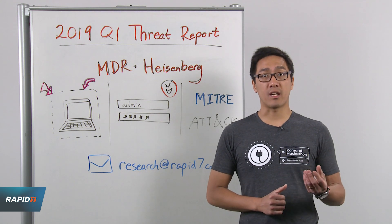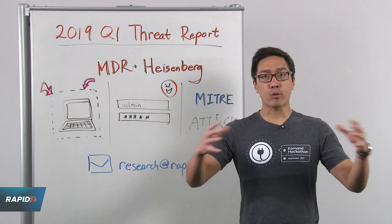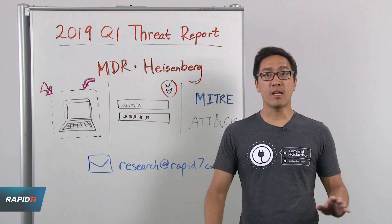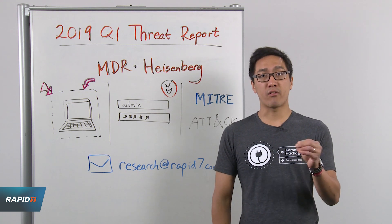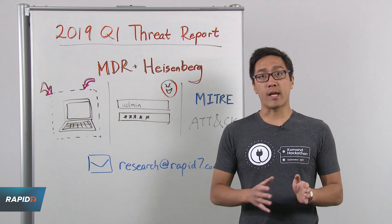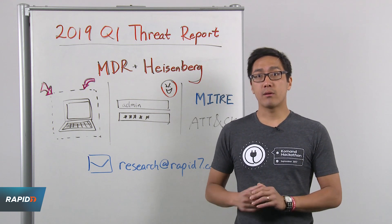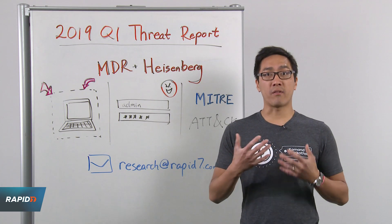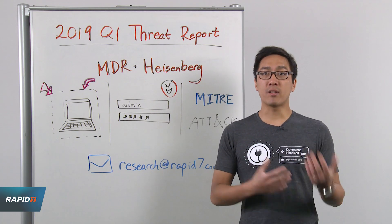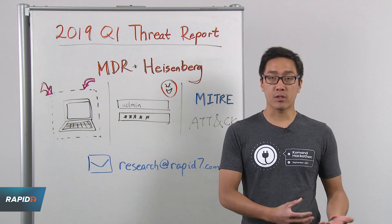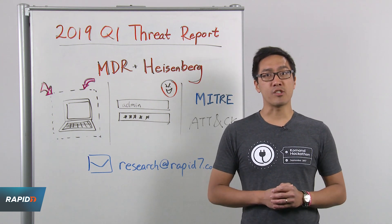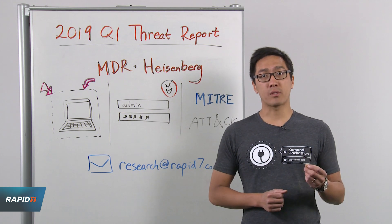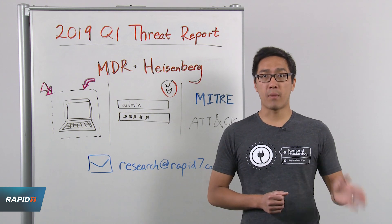One of the things we do with the data is aggregate threat events discovered across different organizations and group them into classes of threats, which we further break down by month. What we see is that remote entry, which includes specific threat events like attempted ingress using disabled accounts or multiple country authentications, is consistently one of the most common threats month to month.